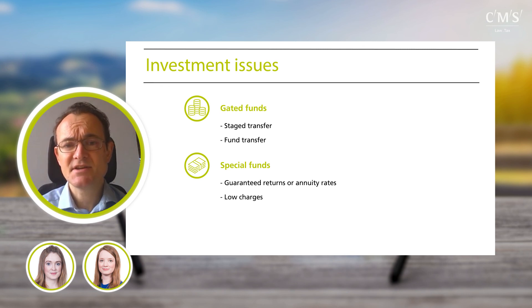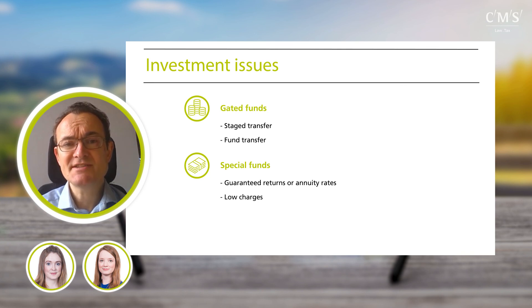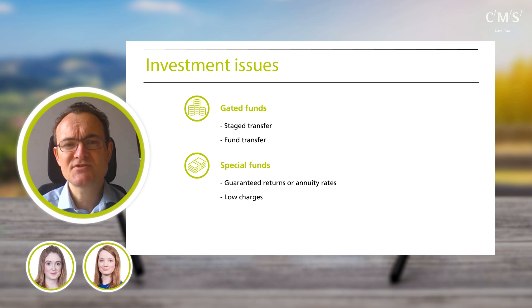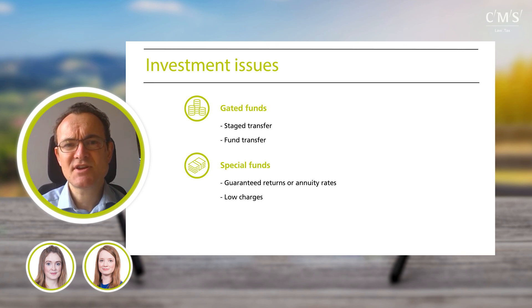If none of those solutions can be achieved, trustees need to look at the whole transfer and work out whether it is in members' interests. This is really key to the whole process — try to identify all issues at the start, work through them with advisors, and see how they can be resolved. Ultimately, you need to get comfortable that the advantages of transferring to a master trust and all it can offer members outweigh any minor differences, and confirm that the transfer is actually in your members' interests.